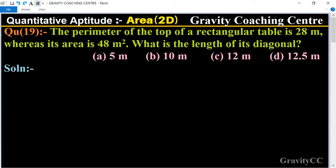whereas its area is 48 meter square, so what is the length of its diagonal? Question is given that the perimeter of the table is 28 meters and its area is also given 48 meter square, so what is the length of its diagonal?